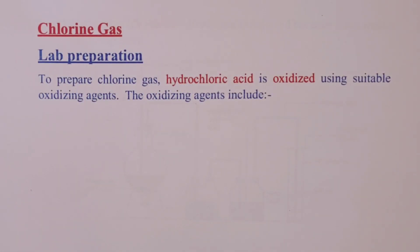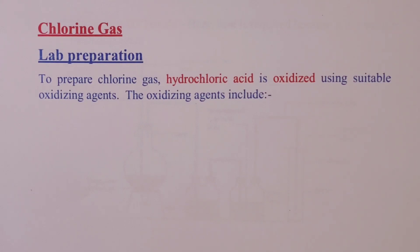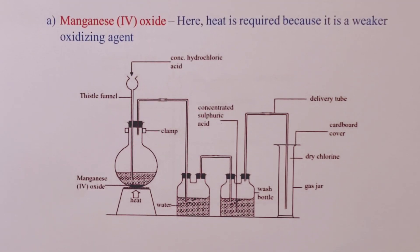For chlorine gas, as far as laboratory preparation procedures are concerned, the gas is usually prepared by oxidizing hydrochloric acid using suitable oxidizing agents. The oxidizing agents are usually three. The first oxidizing agent is manganese(IV) oxide, and if we are using manganese(IV) oxide as an oxidizing agent then we need to supply some heat.